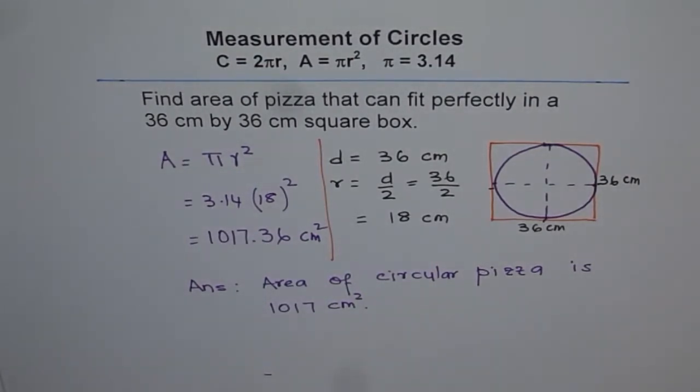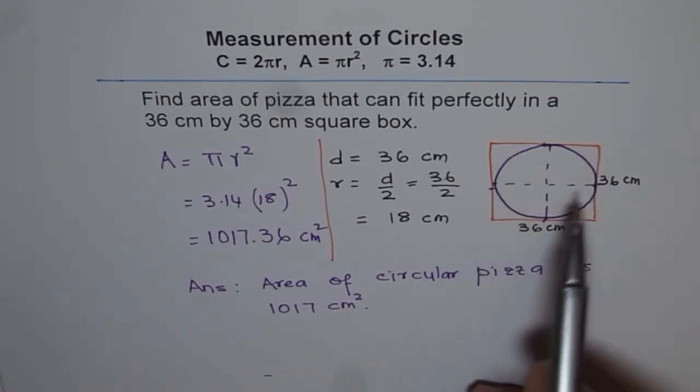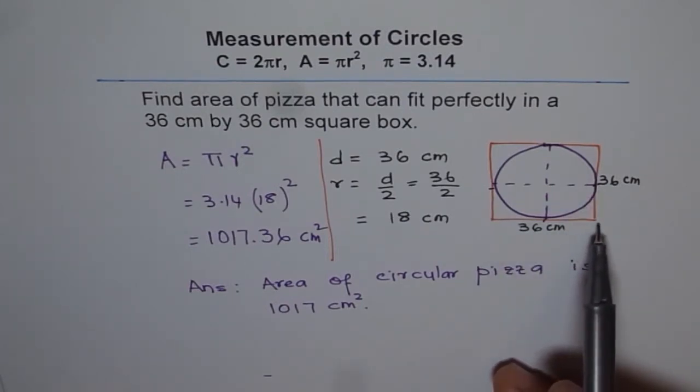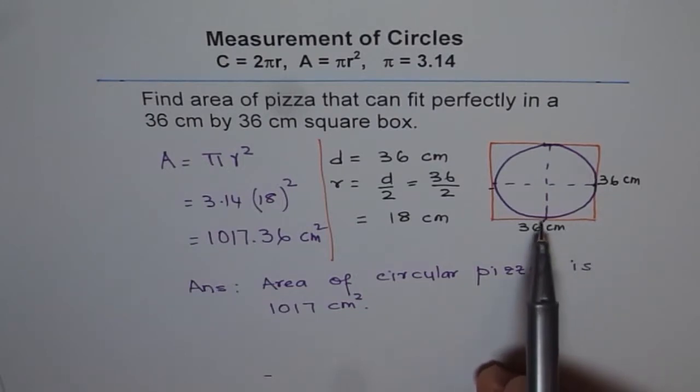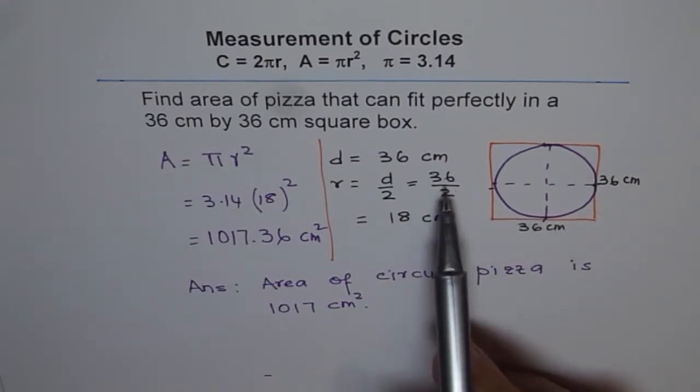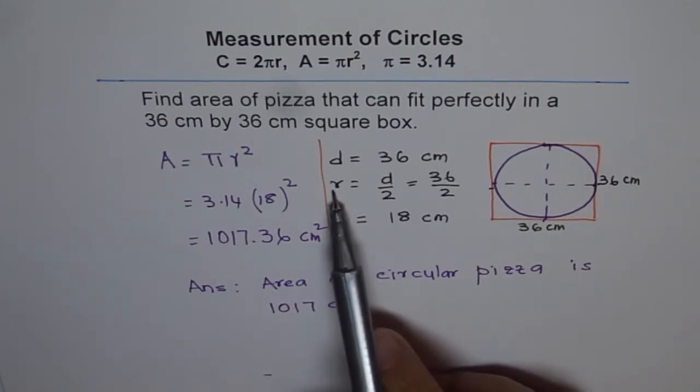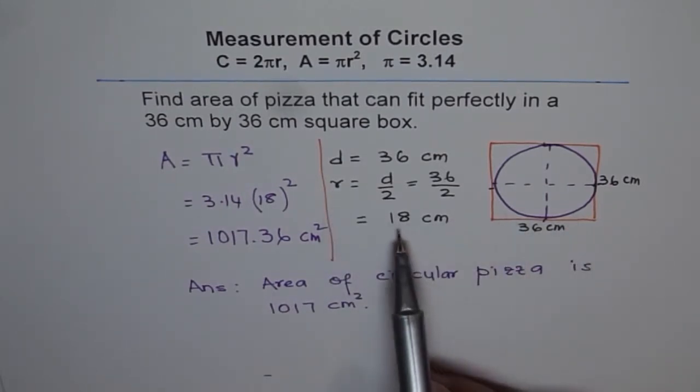So let's try to understand how we did this question. The box is square, so therefore a pizza with maximum diameter of 36 can fit. If the diameter is 36, radius should be half of it. 36 divided by 2 is 18. So radius r for the pizza is 18.